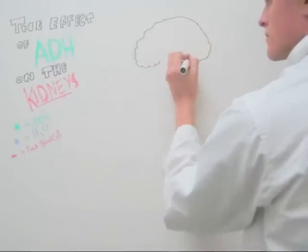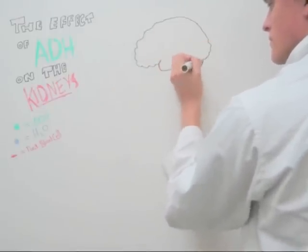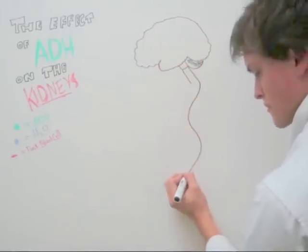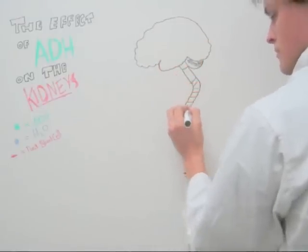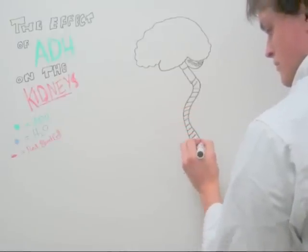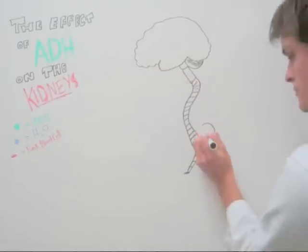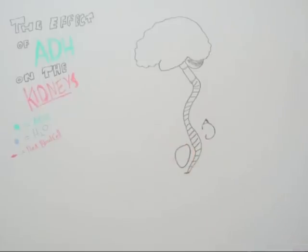We have anti-diuretic hormone in green, water in blue, and red blood cells in red. As pictured here, we have the brain and the spinal cord, the kidney, and the bladder.